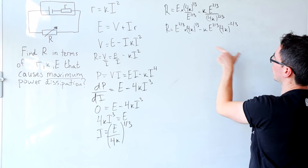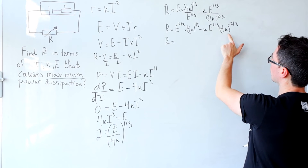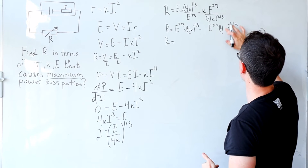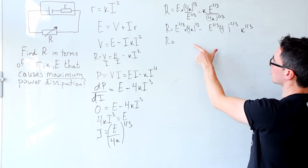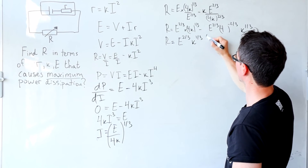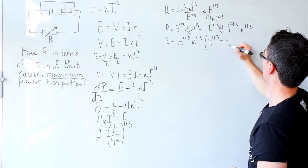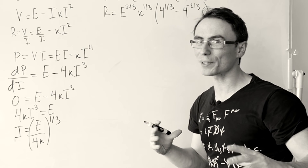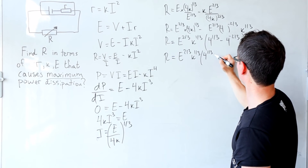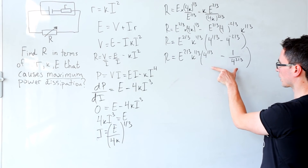Taking out a common factor, we can tidy up the K terms: here we have K to the power of plus 1 and here K to the power of minus 2 over 3, so overall we're left with K to the power of a third. This means we can factor out E to the power of 2 over 3 and K to the power of a third. What remains in the brackets is 4 to the power of 1 over 3 minus 4 to the power of minus 2 over 3. So R equals E to the power of 2 over 3 times K to the power of a third times 4 to the power of 1 over 3 minus 1 over 4 to the power of 2 over 3.